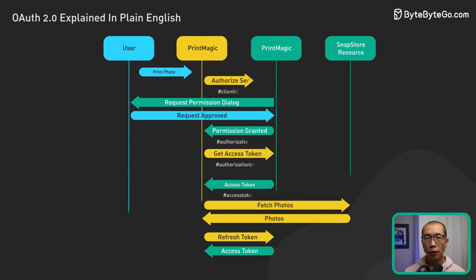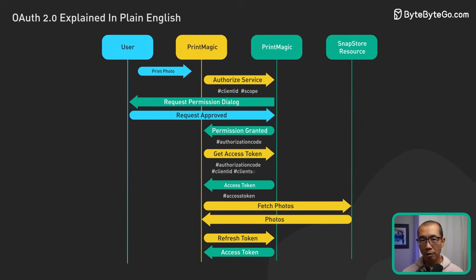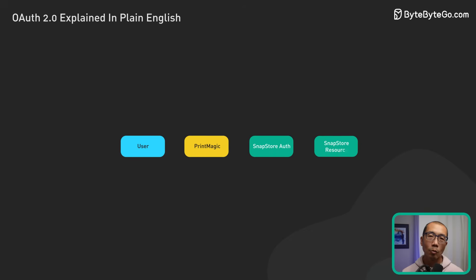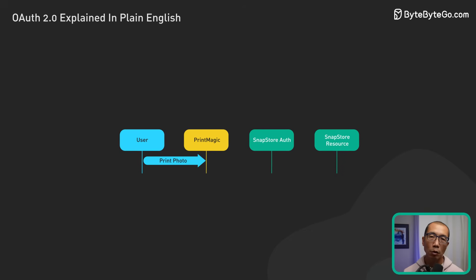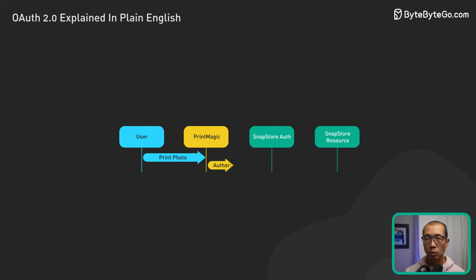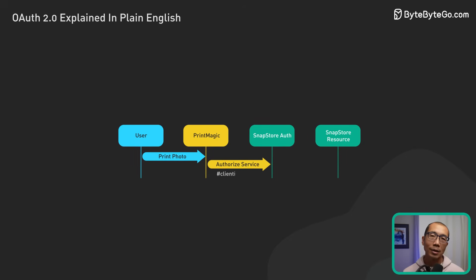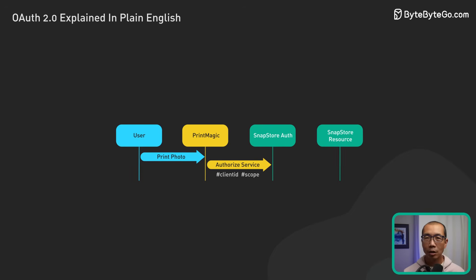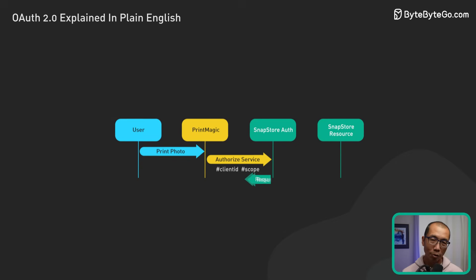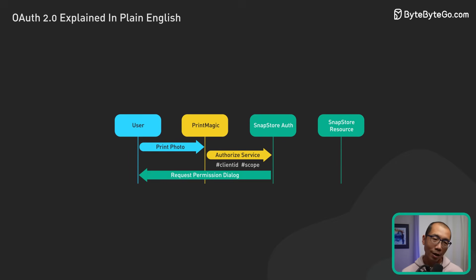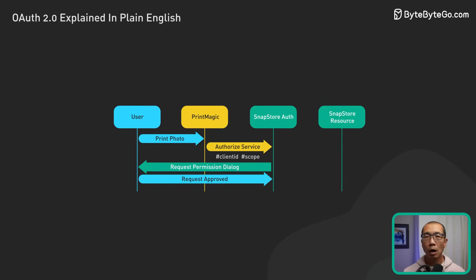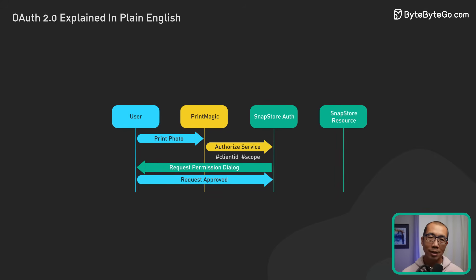Let's follow the OAuth 2 flow in this scenario. It begins when we instruct PrintMagic to fetch photos from SnapStore. PrintMagic sends a client ID and scope — which represents the access level requested — to SnapStore's authorization server. As the resource owner, we authenticate directly with SnapStore and grant PrintMagic consent to access our photos.